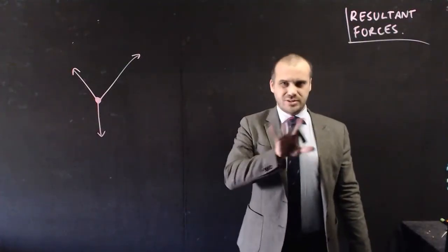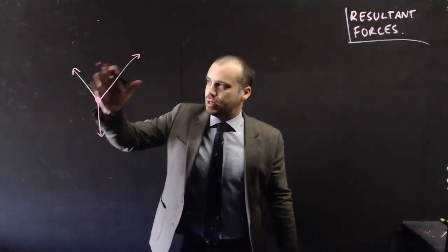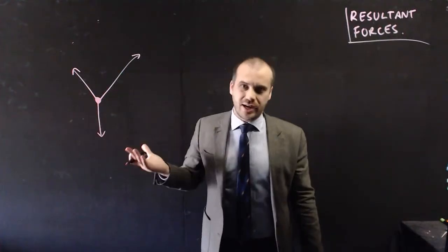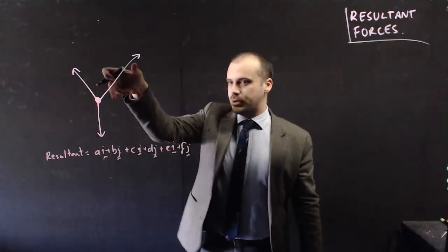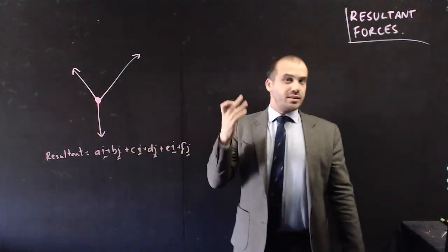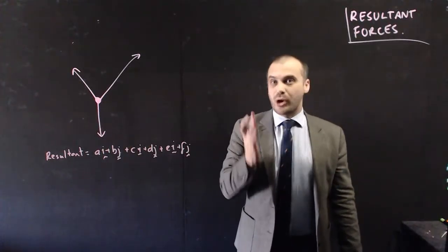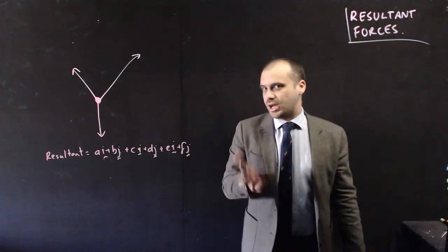So the first method would be to come up with all of them in component form and then just add up the component form. So the resultant would just be whatever this is in component form plus whatever this is in component form plus whatever this is in component form. That'll give you your resultant in component form and then you can figure out whether you want to find the magnitude or the direction after that.